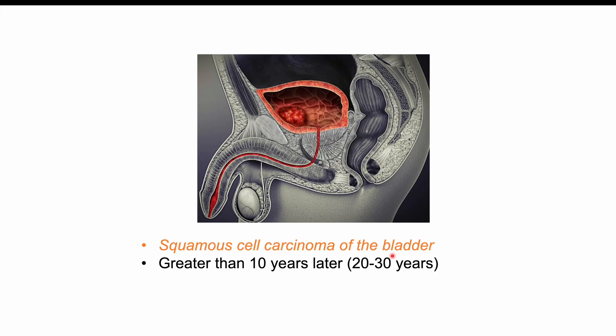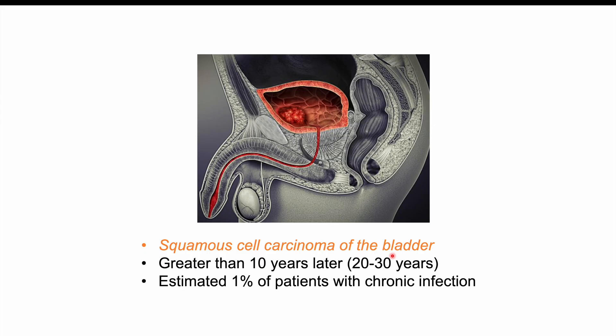About 1% of patients with a chronic infection will develop bladder cancer. There is not a lot of data on this, but that is the number available. However, given that hundreds of millions of people are infected with Schistosoma hematobium, we can see many thousands of people developing squamous cell carcinoma of the bladder from these infections.